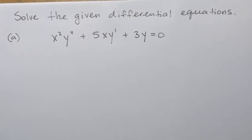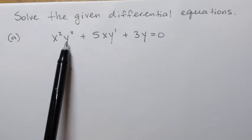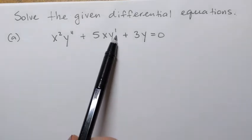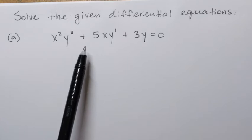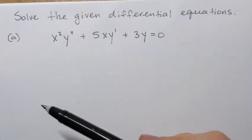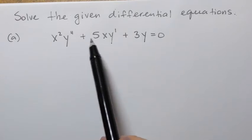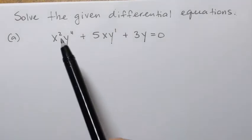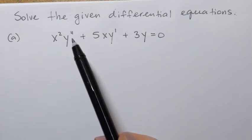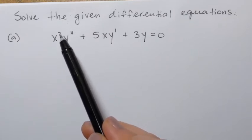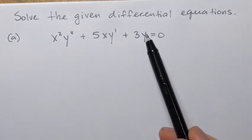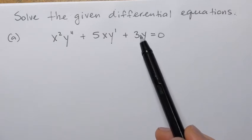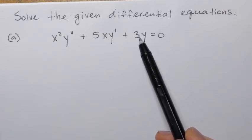We're going to solve several differential equations. Here's the first one: x squared y double prime plus 5xy prime plus 3y equals 0. This is the Cauchy-Euler differential equation. Every term contains x raised to the power that matches the order of the derivative. The second derivative has power 2, the first derivative has power 1, and the y term has no x since x to the power of 0 is 1.